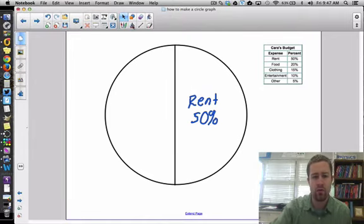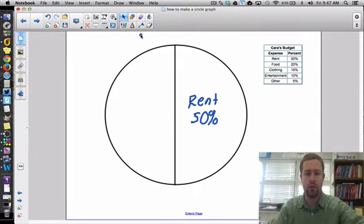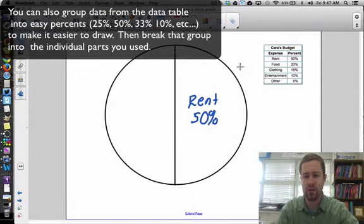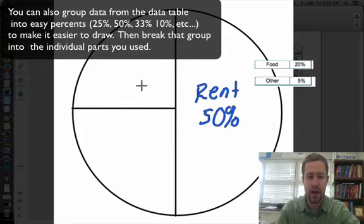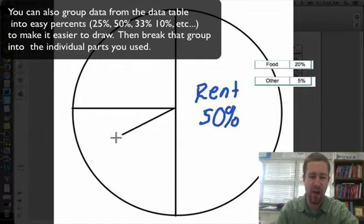Another one that I like to group together very well is I look here and I see other and food. Together, those equal 25%. So I can actually make a quarter right here. And then I'm going to break that up. So right now this is 25%. Now 5% is probably going to look about right here. Now obviously this isn't exact.